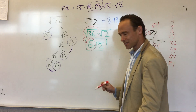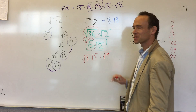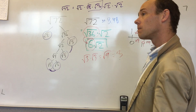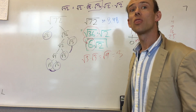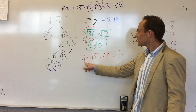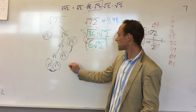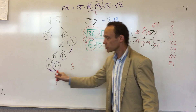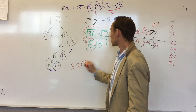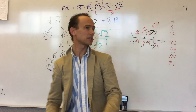This always happens — if you square root a number by itself, you get the number inside. So that pair of root 3s becomes 3. Root 2 times root 2 becomes 2. And you have one root 2 left over. So that gives me 6 root 2. Holler! Next problem, let's go get it.